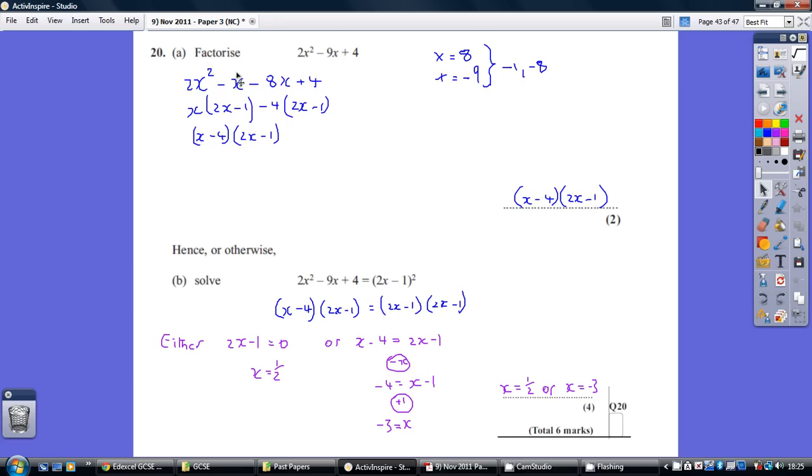You then go and fully factorize the first two terms, which is x, 2x minus 1, and then fully factorize the last two terms, which is minus 4, 2x minus 1, making sure the two brackets are the same.